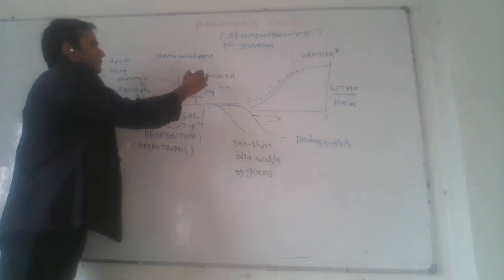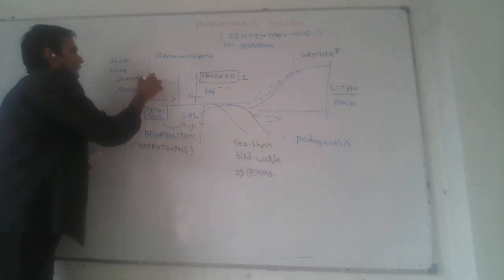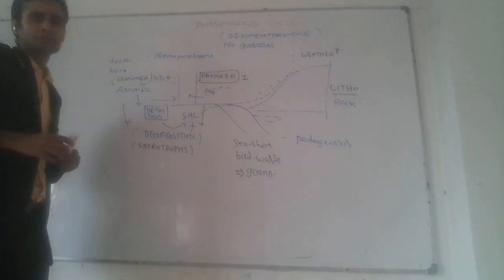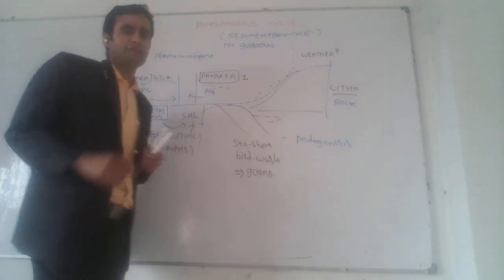From the producer at the first trophic level to second, third, and last trophic levels, consumers take plants or animals as food material. So phosphorus is transferred through different trophic levels.